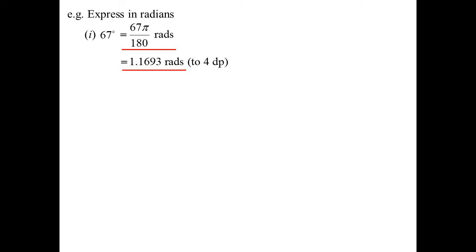By the way, you don't have to have pi in the answer. Radians do not have to be a multiple of pi. Pi is just representing the irrational number, 3.14, etc. So this would be the same as saying 1.1693 to 4 decimal places radians.